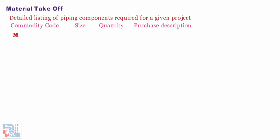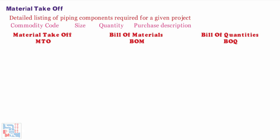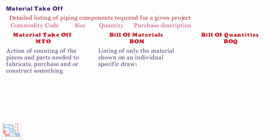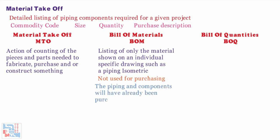Many times we get confused with material takeoff MTO, bill of material BOM, and bill of quantity BOQ. Piping MTO is the action of counting pieces and parts needed to fabricate, purchase, or construct something. Piping bill of material (BOM) is normally a listing of only the materials shown on an individual specific drawing such as a piping isometric. The piping BOM is not used for purchasing; the piping components will have already been purchased and are readily available to the fabricator who builds the line from the material specified on the BOM.